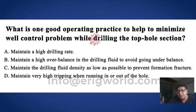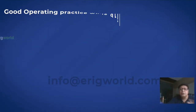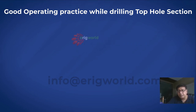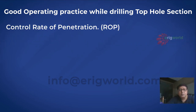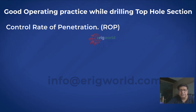Since the formation is very weak, we have to employ practices that will reduce the pressure or BHP during drilling. The first good operating practice: even though we are getting a high rate of penetration, we have to drill in a controlled fashion. This gives two advantages. First, controlling rate of penetration creates less cuttings, and due to less cuttings there will be less overburden — less increase in BHP due to high volume of cuttings.